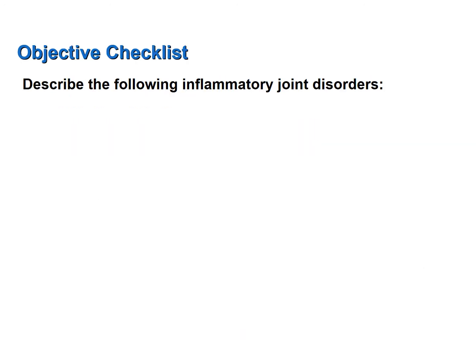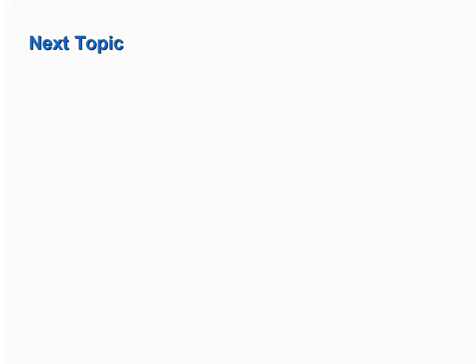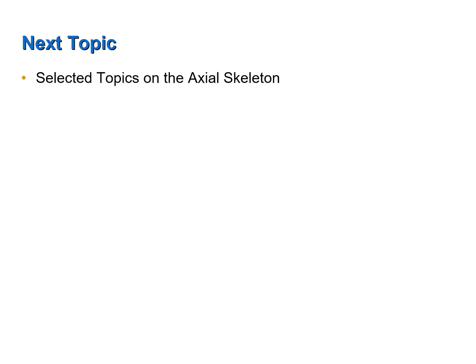Now let's review the objectives that this screencast was designed to help you achieve: describe the following inflammatory joint disorders — bursitis and tendinitis, osteoarthritis, rheumatoid arthritis, and gouty arthritis, or gout. The next screencast will cover selected topics on the axial skeleton.